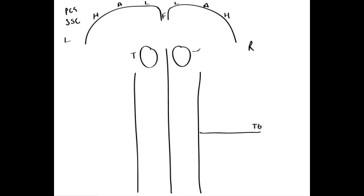Don't forget, these are your thalami here and here. We just need to draw one structure of the brainstem — the level of the closed medulla. At the level of the closed medulla, on the dorsal surface of the brainstem, we have those two pairs of tubercles: the gracile and the cuneate tubercle. Within the tubercles, we have the gracile and cuneate nuclei. Remember, we have the cuneate nuclei medially and the gracile nuclei laterally.